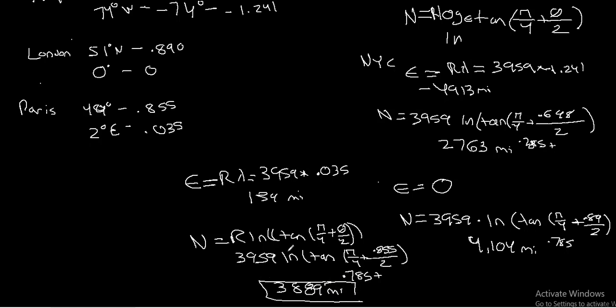So that would be the easting and northing for our three cities using the conformal cylindrical projection. Hopefully that makes sense. And if you have any questions, please reach out. Thank you.